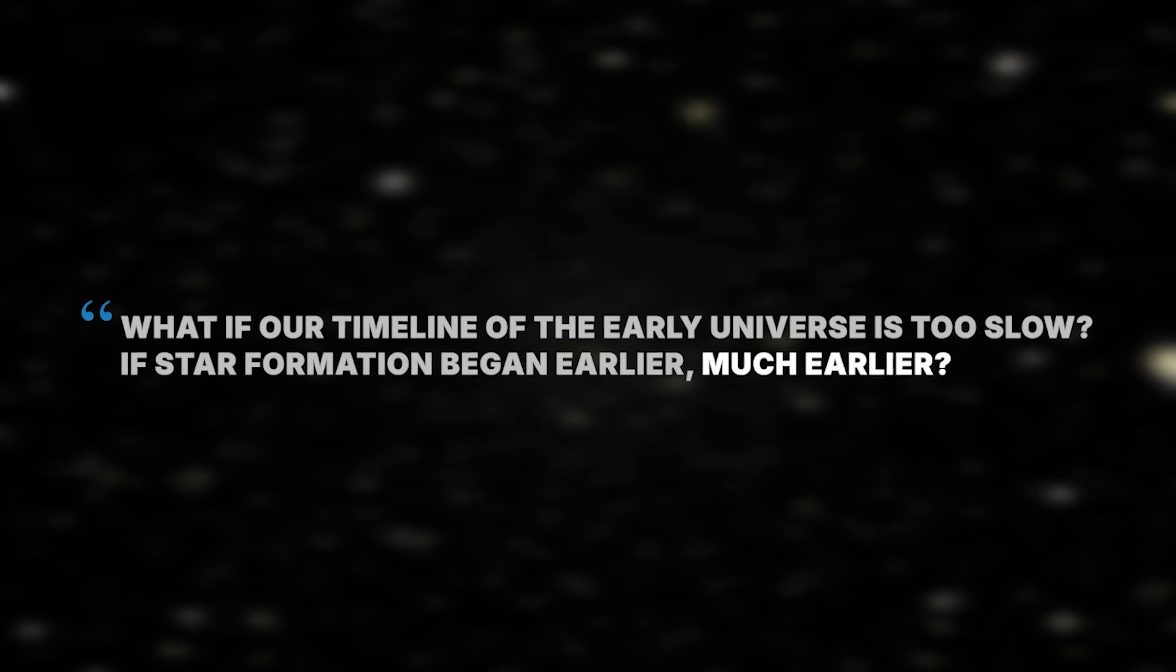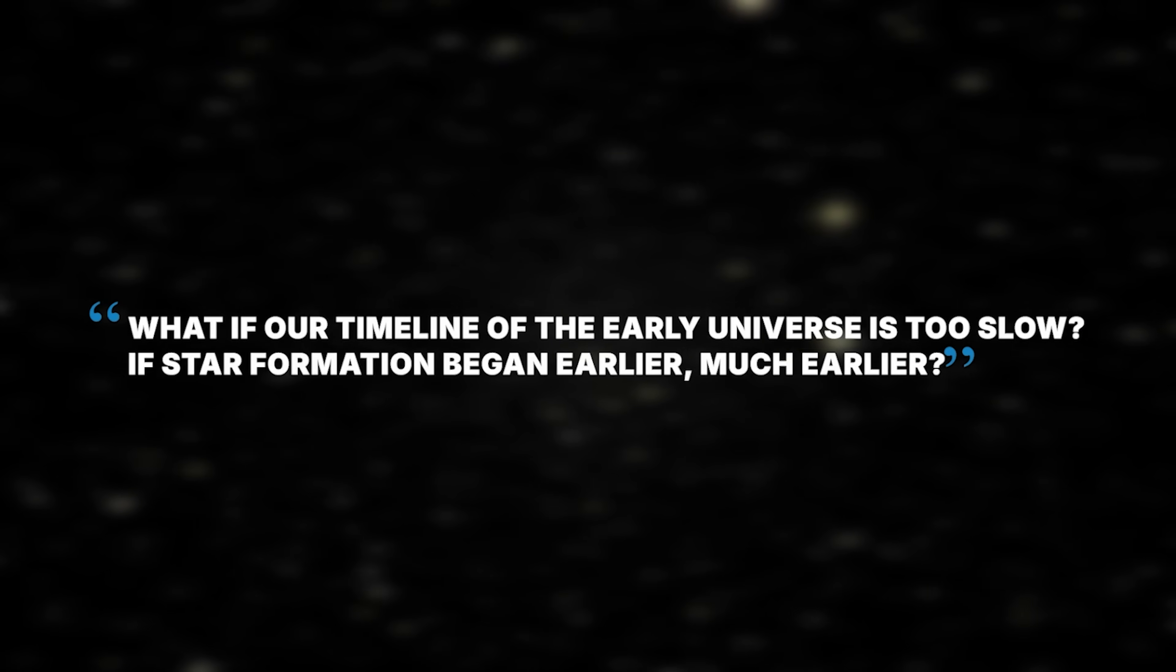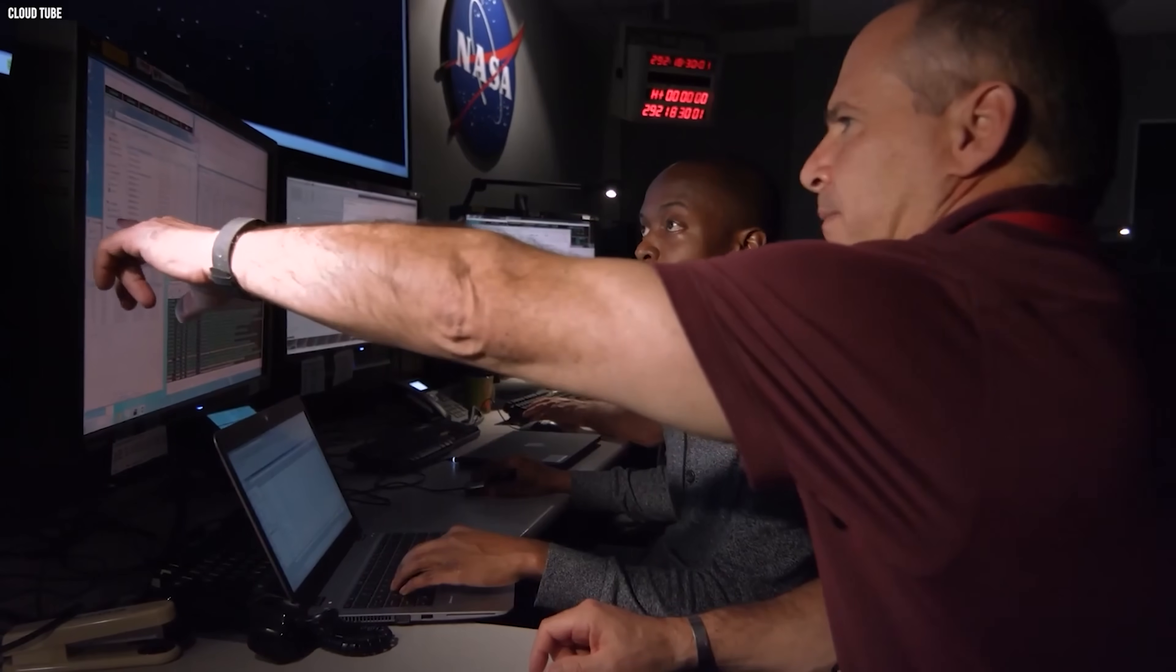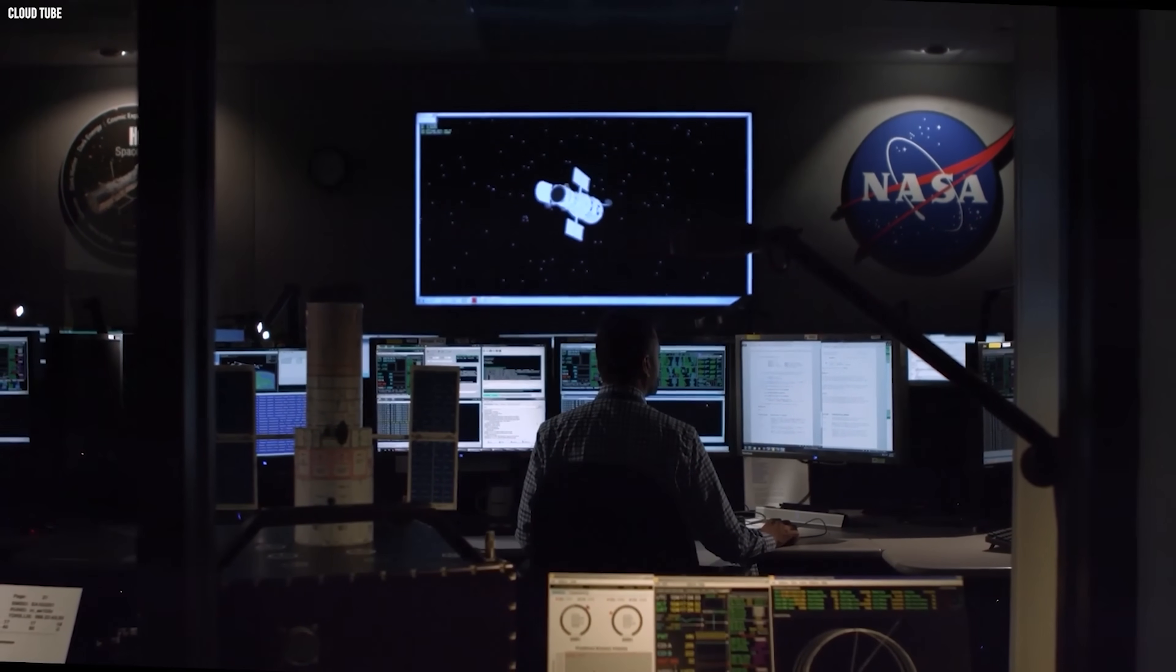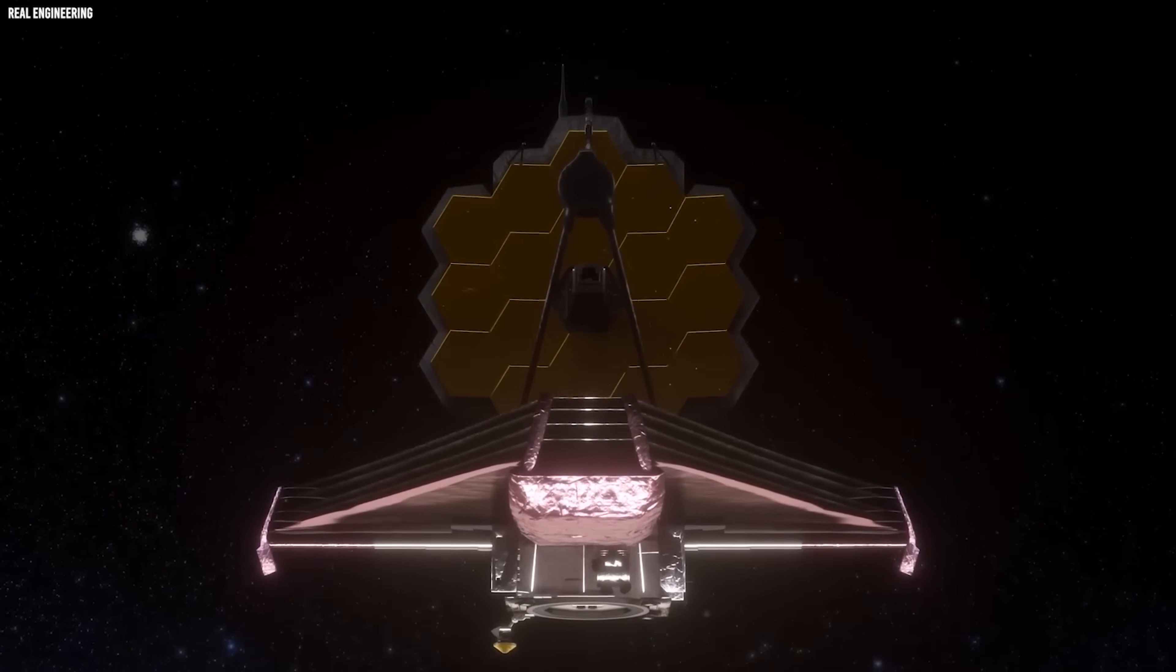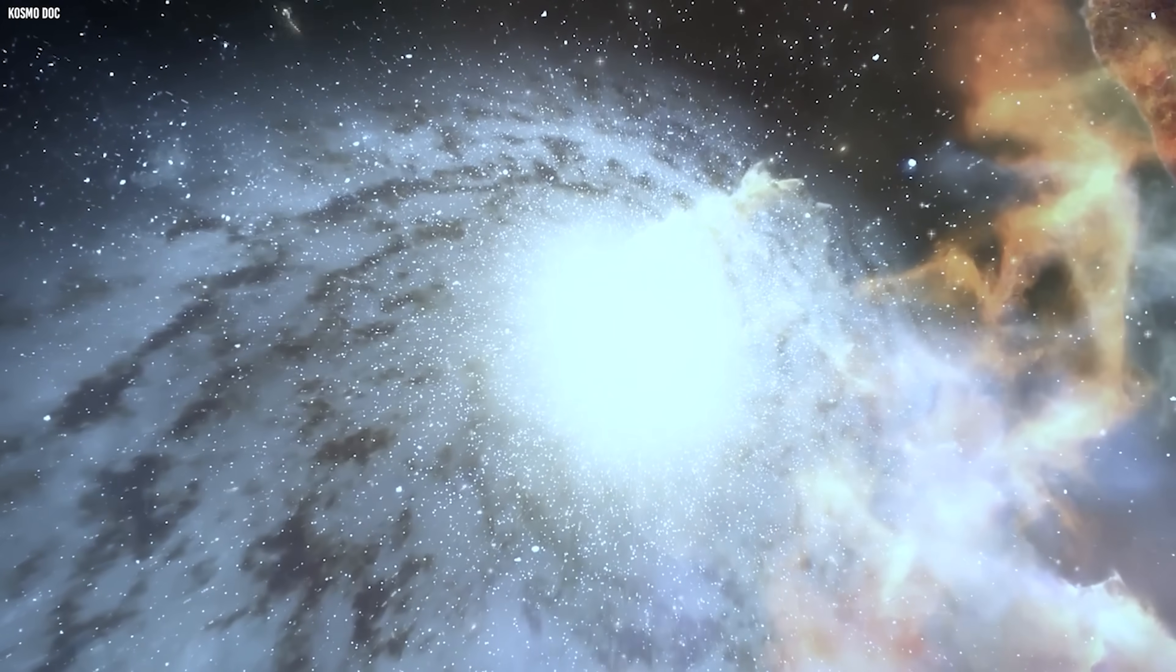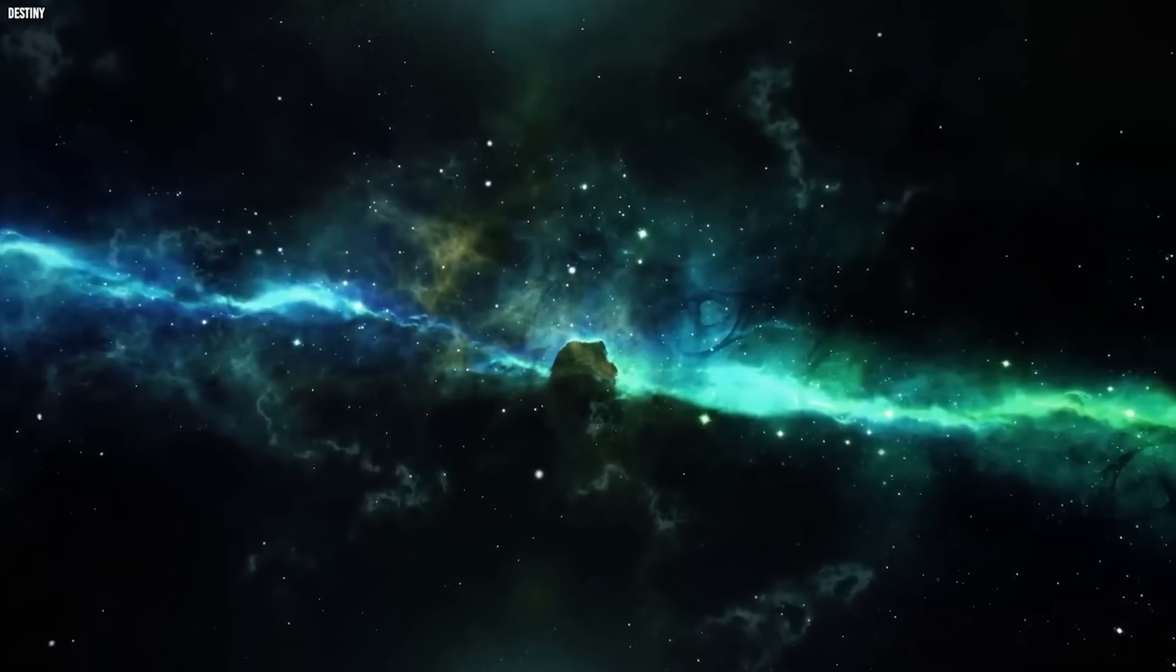Some researchers began asking a provocative question. What if our timeline of the early universe is too slow? If star formation began earlier, much earlier, then the entire sequence of cosmic evolution shifts. Even NASA's theoretical teams acknowledged the tension. One internal memo circulated a few months ago reportedly read: Webb data suggests either new physics, an early universe acceleration mechanism, or an incomplete understanding of primordial structure. None of those options is comfortable. All of them are fascinating.